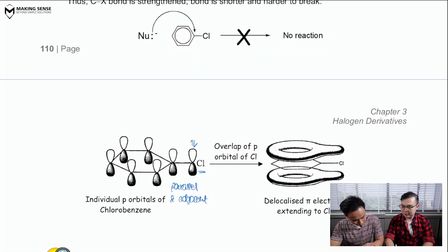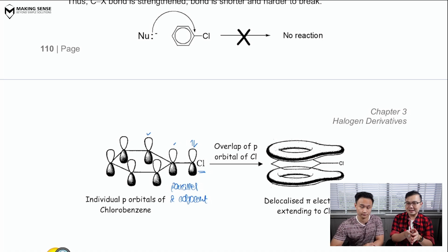Now, because these p orbitals are parallel and adjacent to the electron cloud from the benzene, Mr. Tim, can you tell me what's going to happen? Well, if the p orbitals are sideways and they're parallel, they're going to overlap.